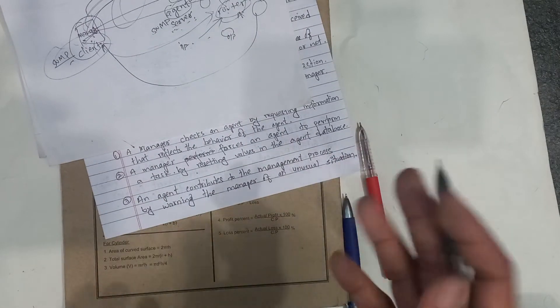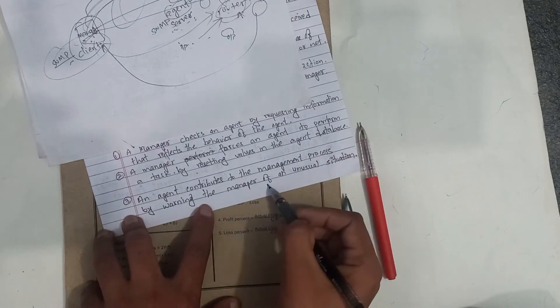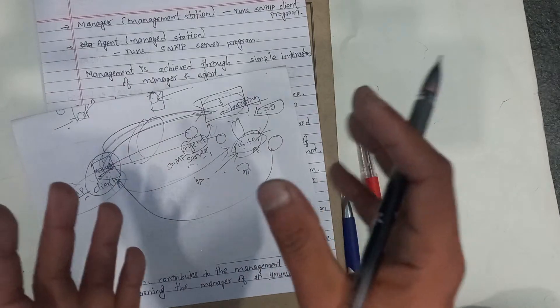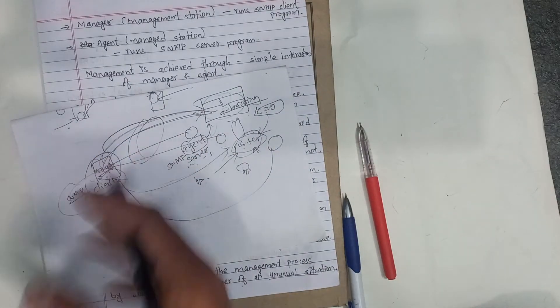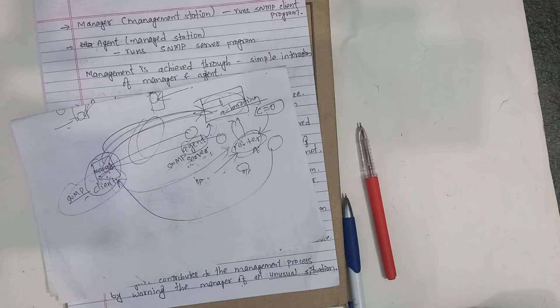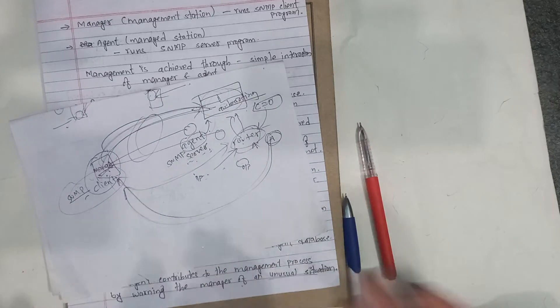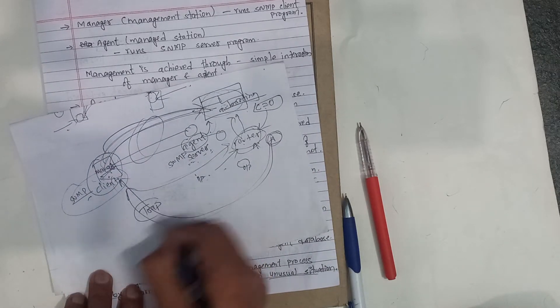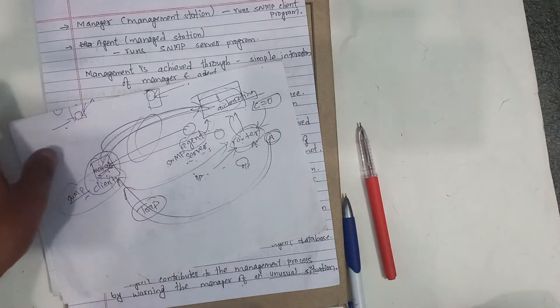What can the agent do? The agent contributes to the management process by warning the manager of unusual situations. If there is an unusual situation, the agent notifies the manager.